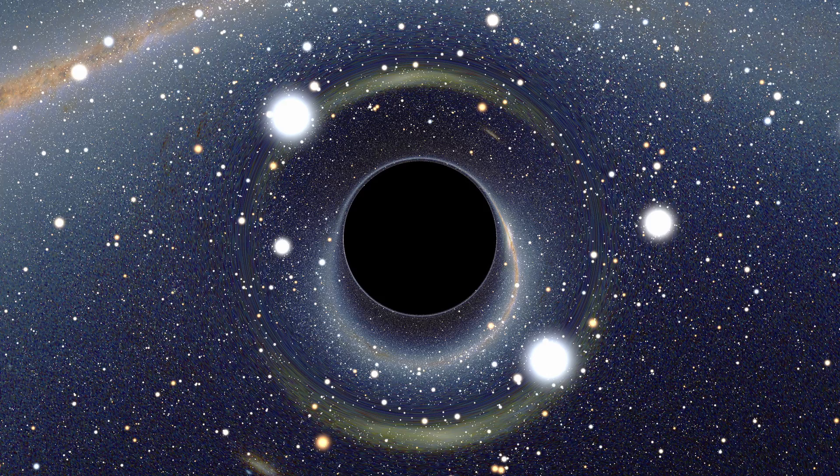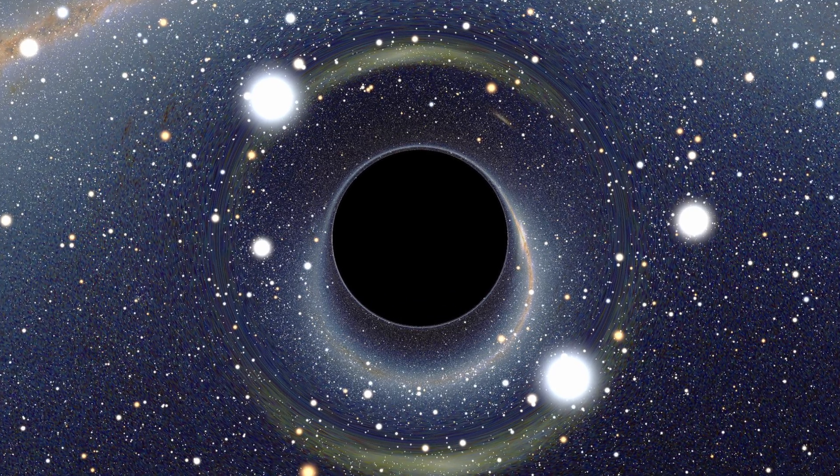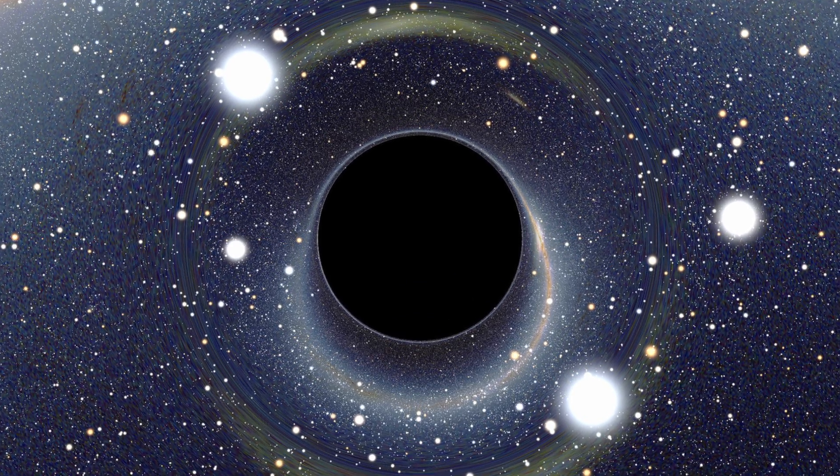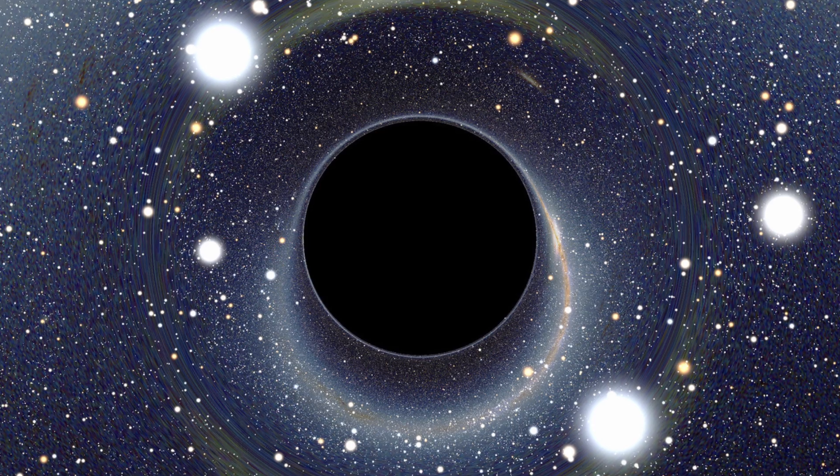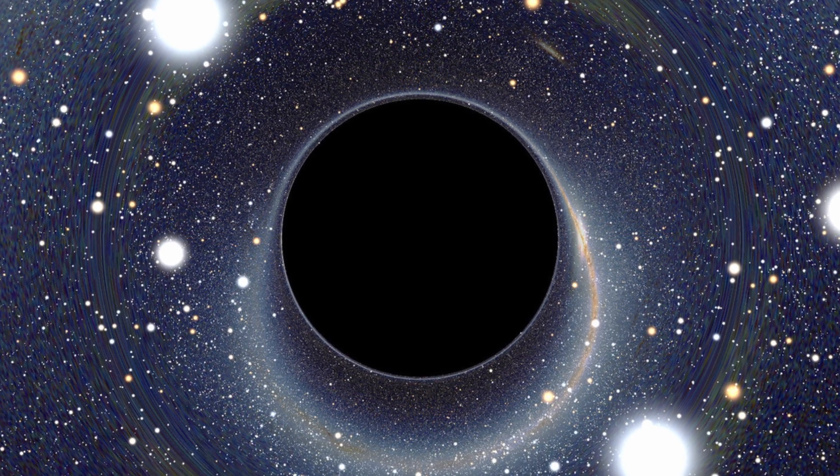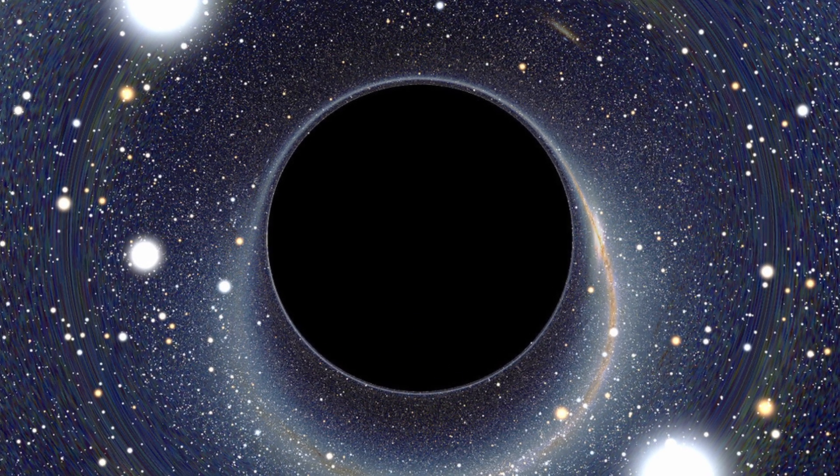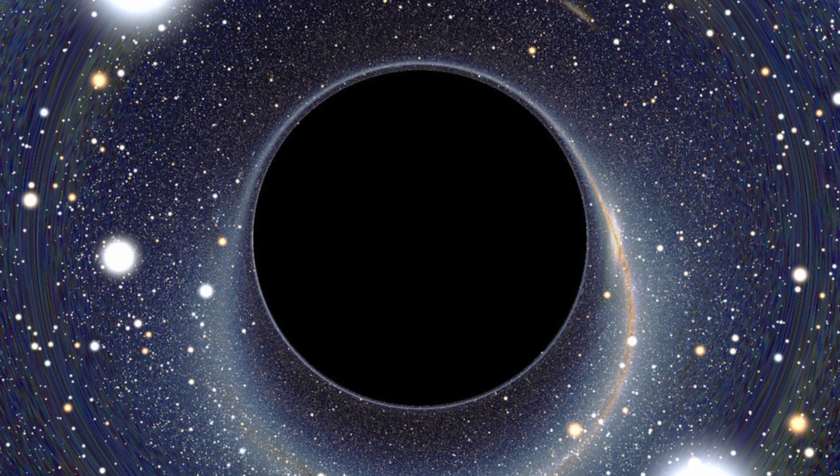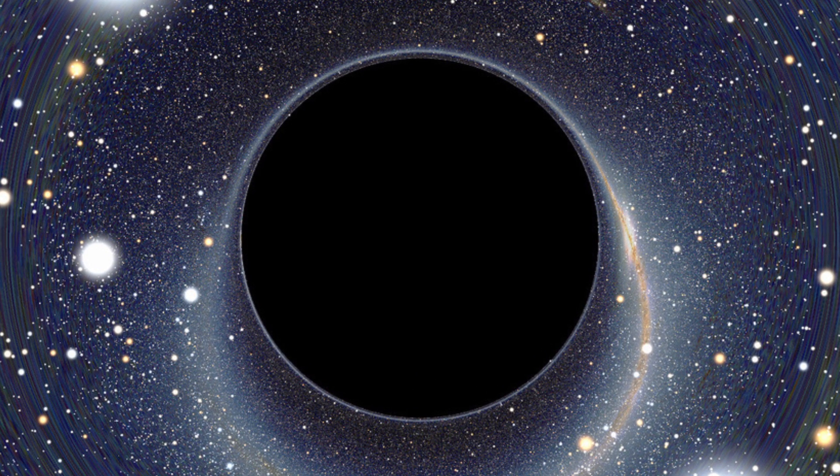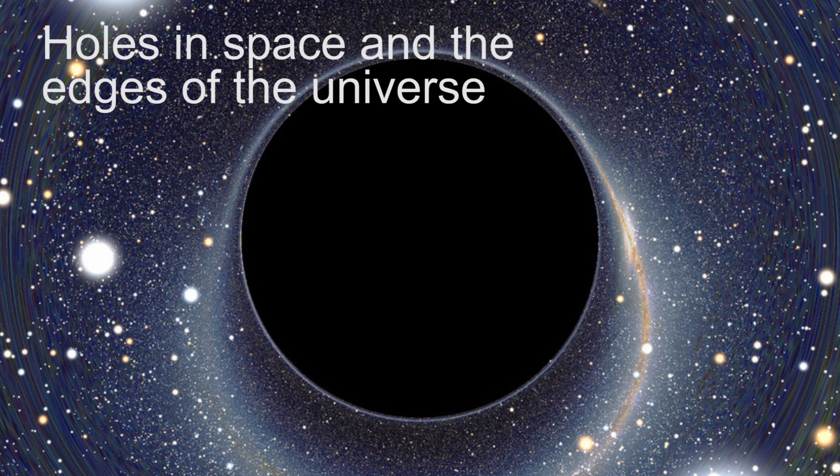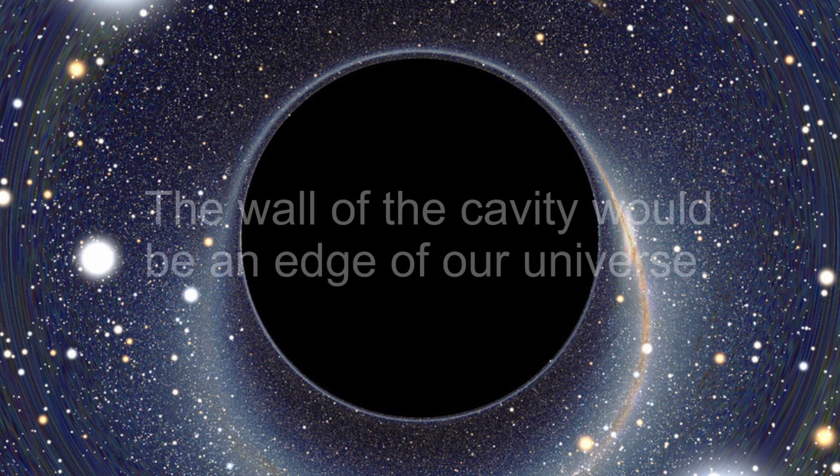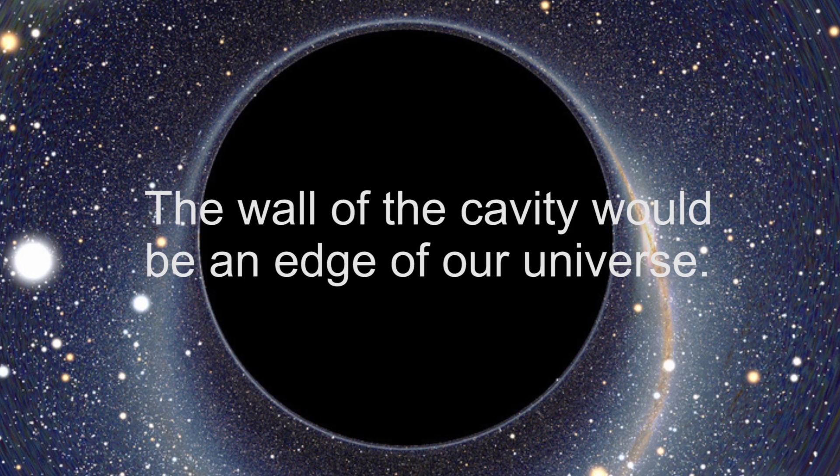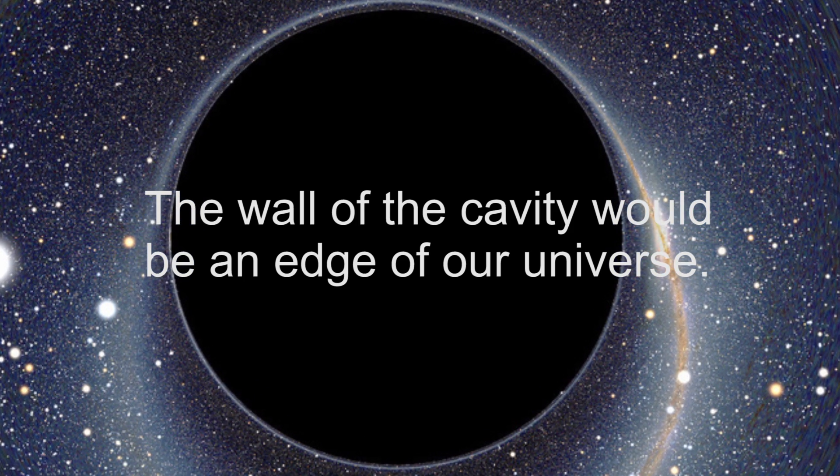Since the Schwarzschild metric is also the description of space around a black hole, we can now make two deductions. The first is that the cavities we have been speculating about are subatomic black holes. And the second is that any black hole, no matter what its size, is an actual hole in the fabric of space. General relativity is all about the relationship between matter and space. So inside a cavity, where there is no space, the theory of general relativity simply doesn't apply. The wall of the cavity would be an edge of our universe, the surface where physics as we know it ends.